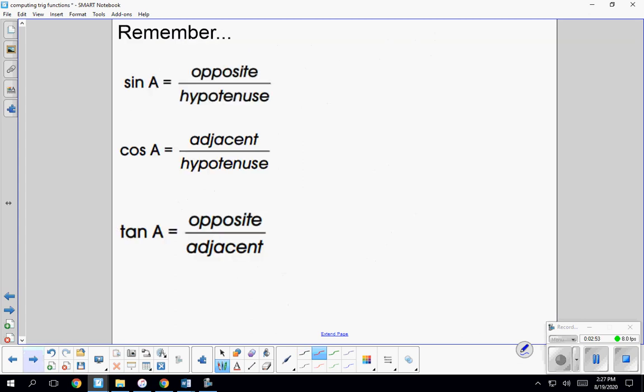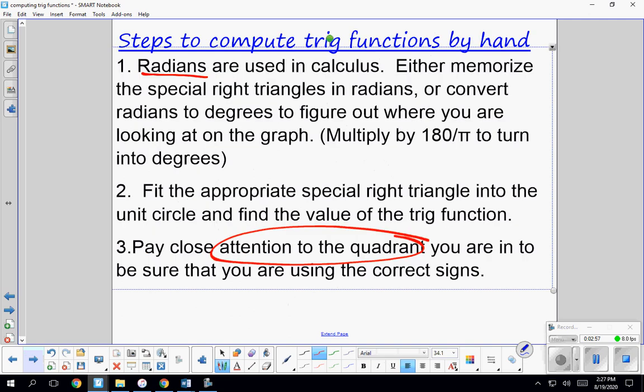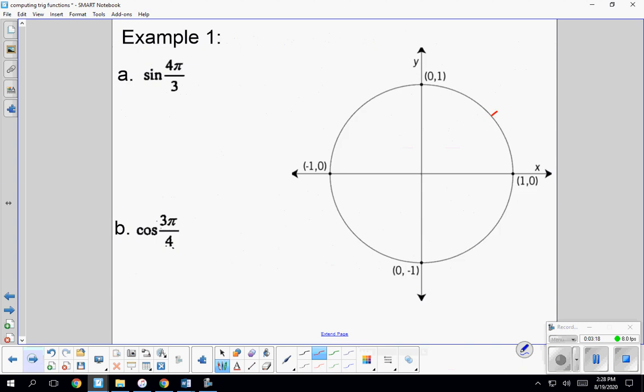So just remember the rules for SOHCAHTOA. And then here's your steps. I'm not going to read all of these to you, but we do use radians in calculus. We shouldn't actually have to do this because hopefully it'll be more common sense. But we're going to use the appropriate right triangle. Just make sure you're paying attention to what quadrant you're in so that you know which ones are negative or not.